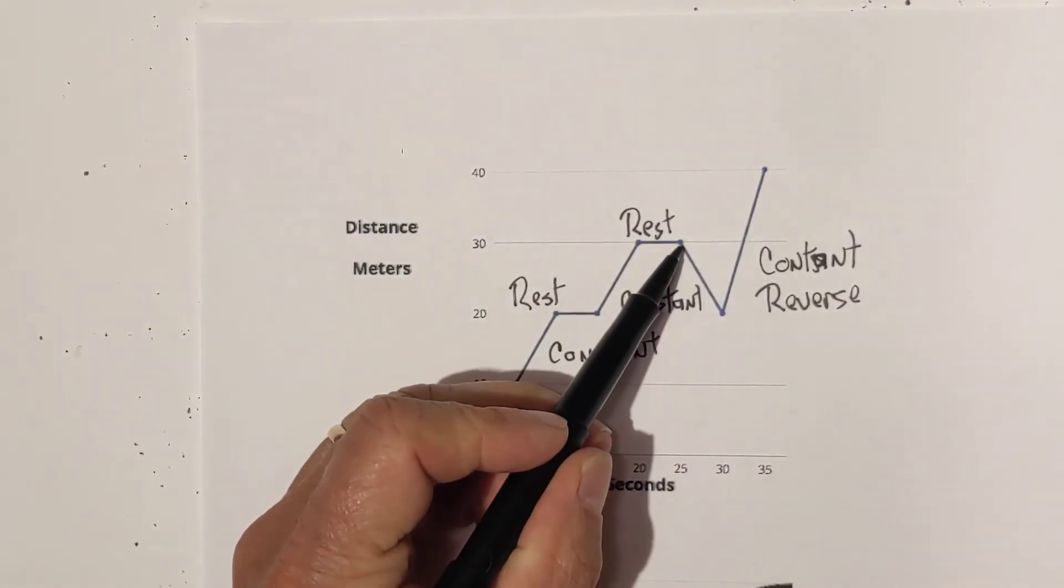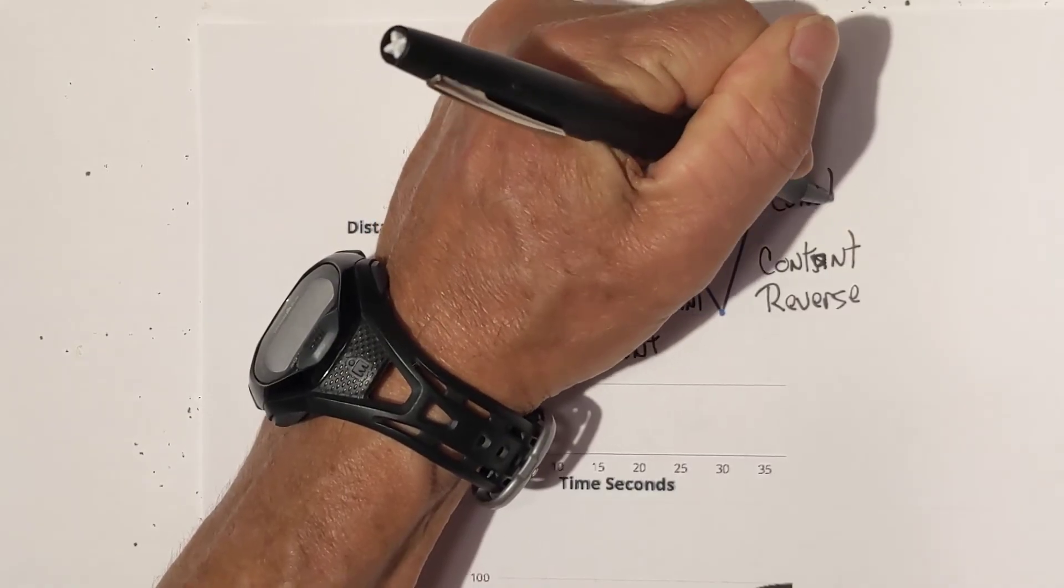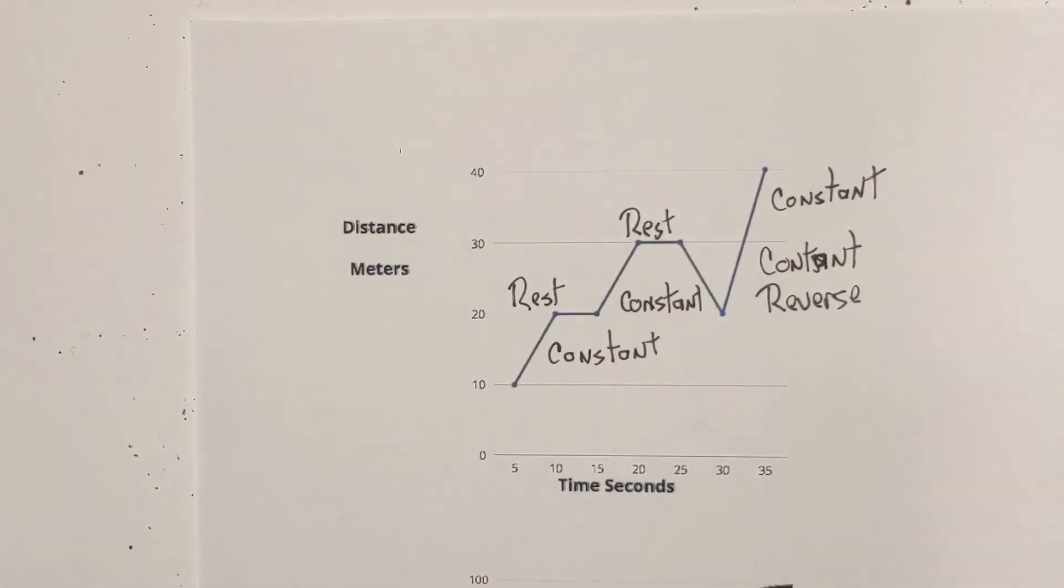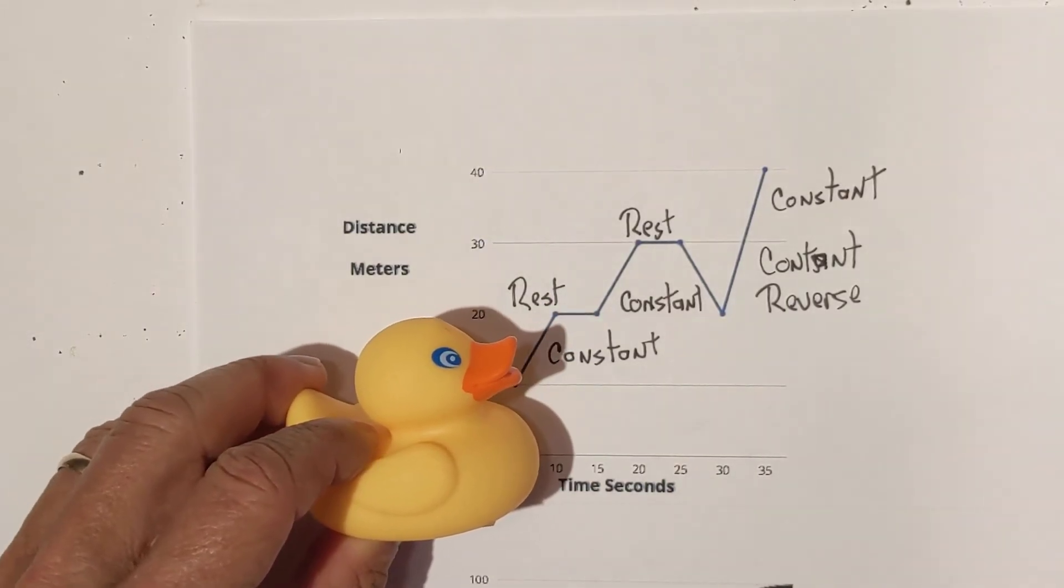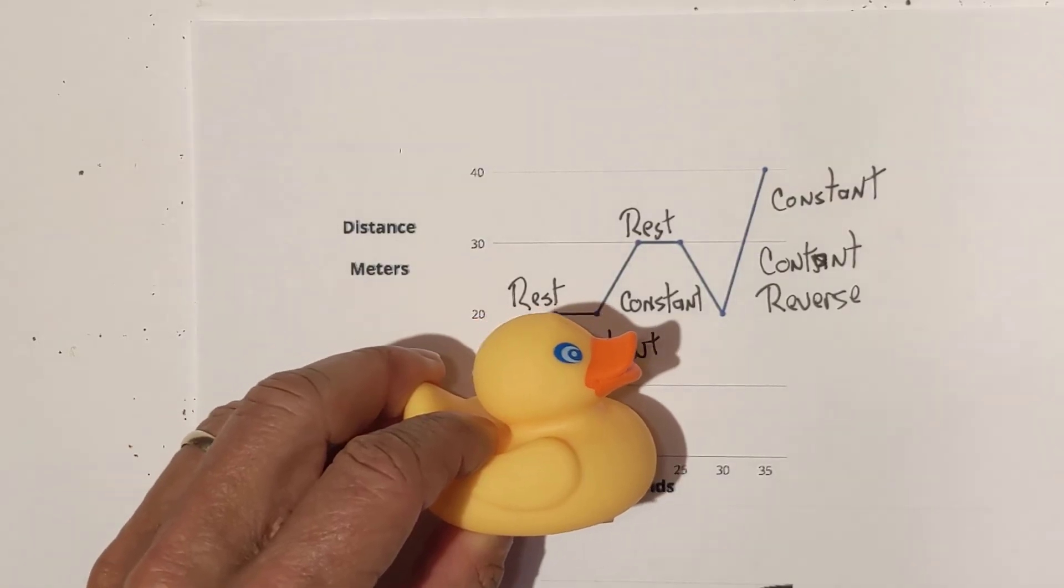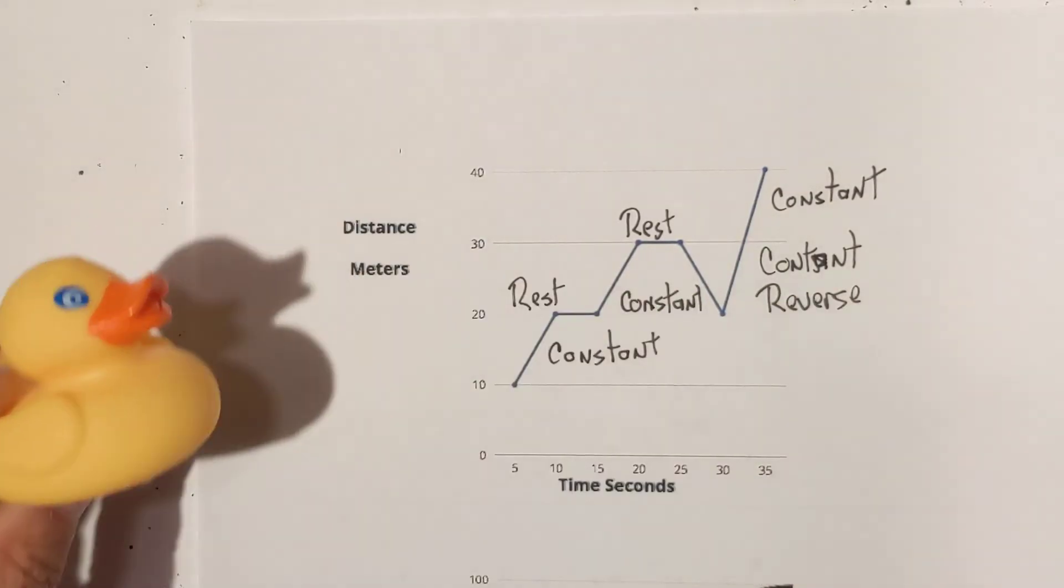Okay, so right here is reverse and then once again, you're going forward. So, let me get the rubber ducky out and I'll show you what that looks like. Okay, beginning constant speed, then rest, then constant speed, then rest, then backwards, and then a quick forward. I'll show you one more time.